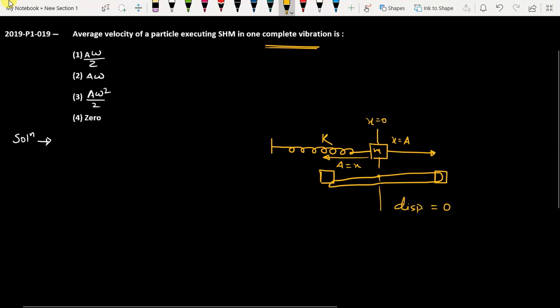We have to find out the average velocity. If you talk about average velocity, it is displacement divided by time. Now, as you can understand, displacement is zero. Whatever is the time, that time will be basically one time period T. So the average velocity will be equal to zero divided by T, which equals zero.